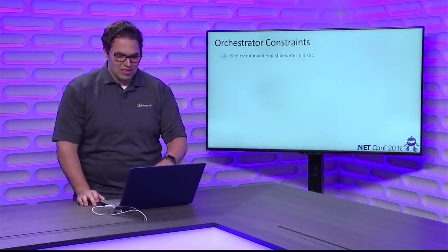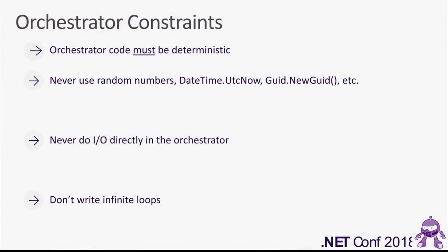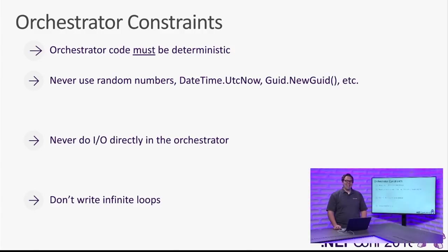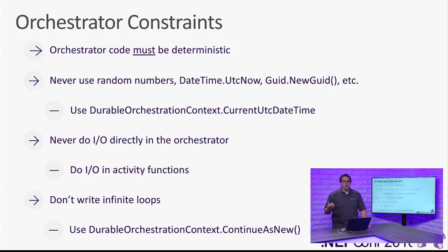A few things to avoid: don't use random numbers, don't say get the current DateTime, don't generate new GUIDs. Also, don't do IO directly in an orchestrator — don't go read files or pull in files directly from the orchestrator. And don't write infinite loops. Writing infinite loops is really never a great idea. The good news is we have workarounds for all of these constraints, because there might be scenarios where I care about what the current time is, where I need to read file data, or where I actually want this thing to run indefinitely.